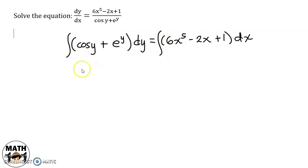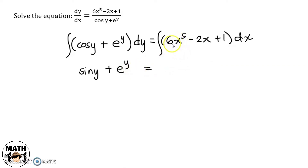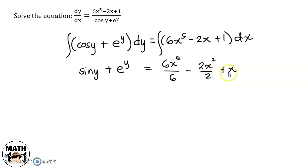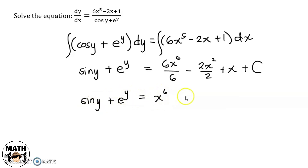The integral of cosine y dy is sine y, plus the integral of e raised to y dy is just e raised to y. Hindi ko nalalagyan dito ng constant — sa right side ko nalang ilalagay. Equals the integral of 6x to the 5th power dx is 6x to the 6th divided by 6, minus 2x squared over 2, plus x, plus the constant kasi nga indefinite integration. So, simplify lang natin yung right side and we'll have sine y plus e raised to y equals x to the 6th minus x squared plus x plus c. So, this is now the general solution of this differential equation.